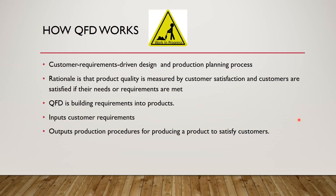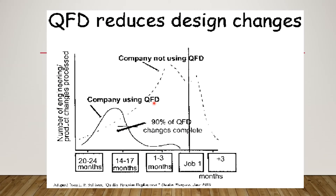How does QFD work? QFD is about building requirements into products. You input customer requirements into QFD and it outputs production procedures for producing a product that satisfies the customers. Here is an example of QFD implementation. We can see that a company not using QFD has more design changes compared to a company that is using QFD.